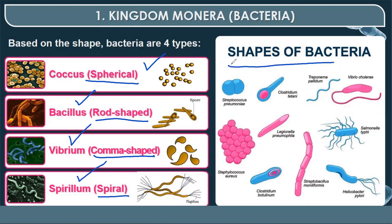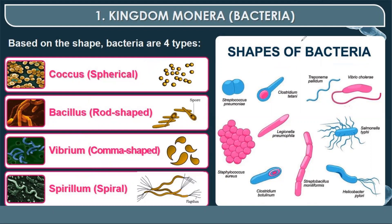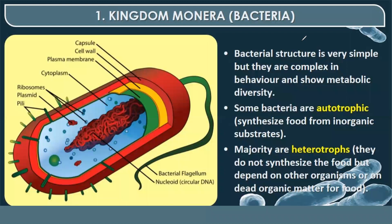Examples of circular, rod-shaped, comma-shaped and spiral-shaped bacteria are shown. Bacterial structure is very simple, but they are complex in behavior and show metabolic diversity. Some bacteria are autotrophs, but the majority are heterotrophs. Heterotrophs do not synthesize food; they depend on other organisms or dead organic matter for food.